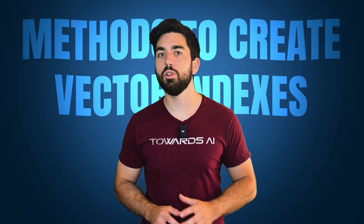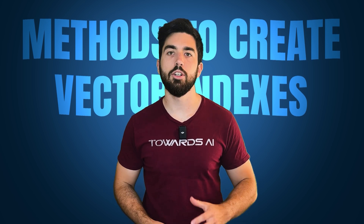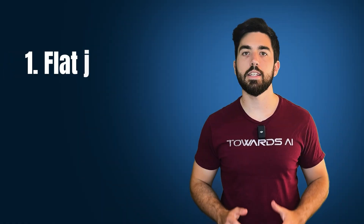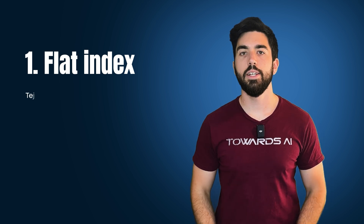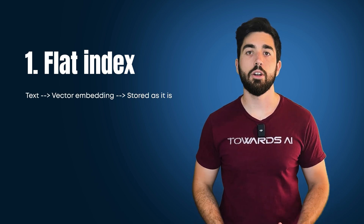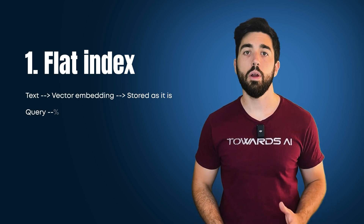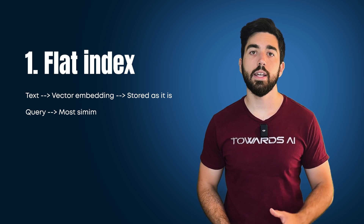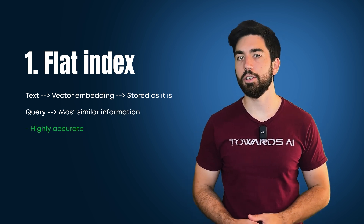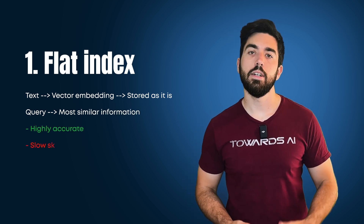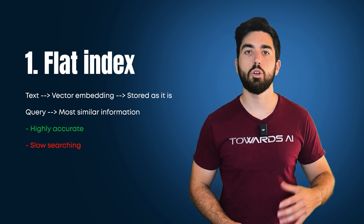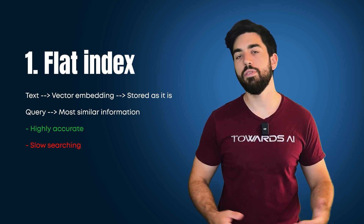There are various methods to create vector indexes. The easiest is the flat index. Here, we convert the text into a vector embedding and store it as it is. We use a query to search it and get back the most similar information. The advantage is that it is highly accurate. Still, the disadvantage is that it makes searching very slow — you need to compare your query embedding with all your data.